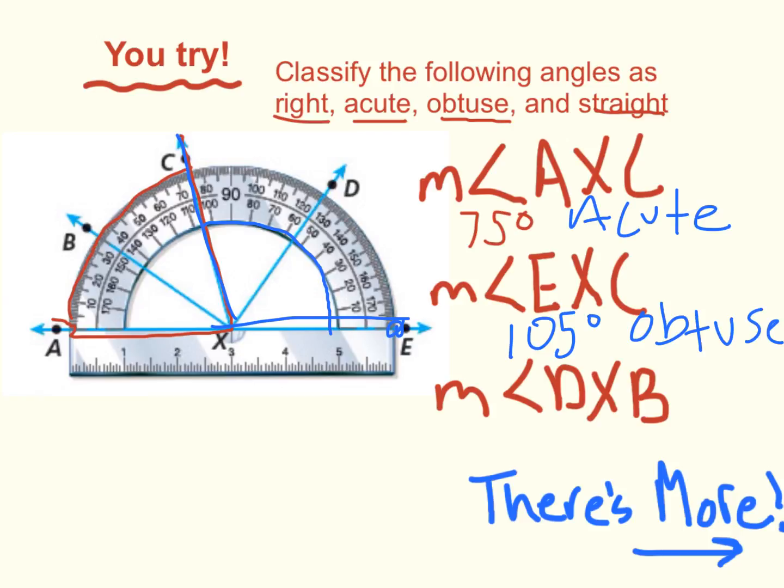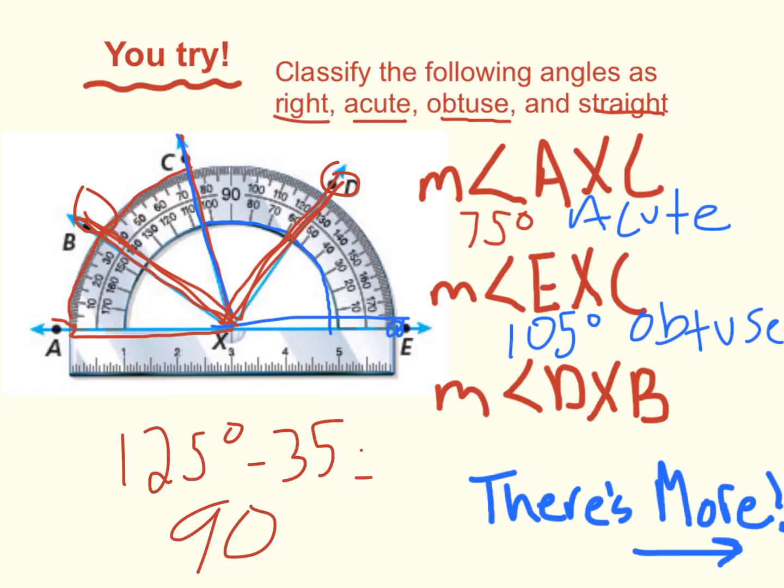Now, the last angle we're looking at is from D, X, B. Now, it's a little difficult because our protractor doesn't read from zero here. We start at ray D, which is at 125 degrees. And then we have to subtract where ray B is, which is at 35 degrees. If we do the math, we get 90 degrees. And so, we actually have a right angle. And we can add our little box.